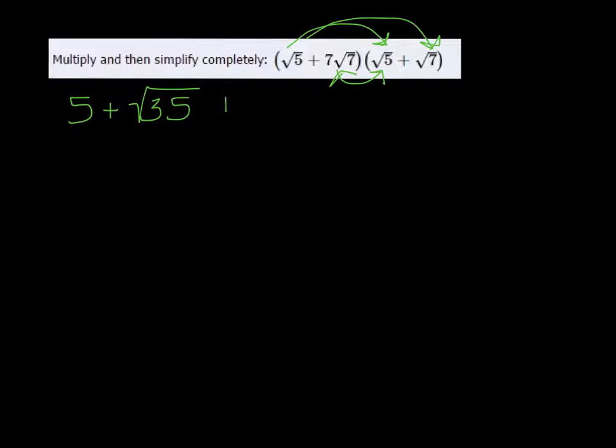and I'm going to get plus 7 root 35. And then the last: 7 root 7 times root 7 is plus 7 square root of 49. Okay, these two middle terms are called like terms, and even though there's no